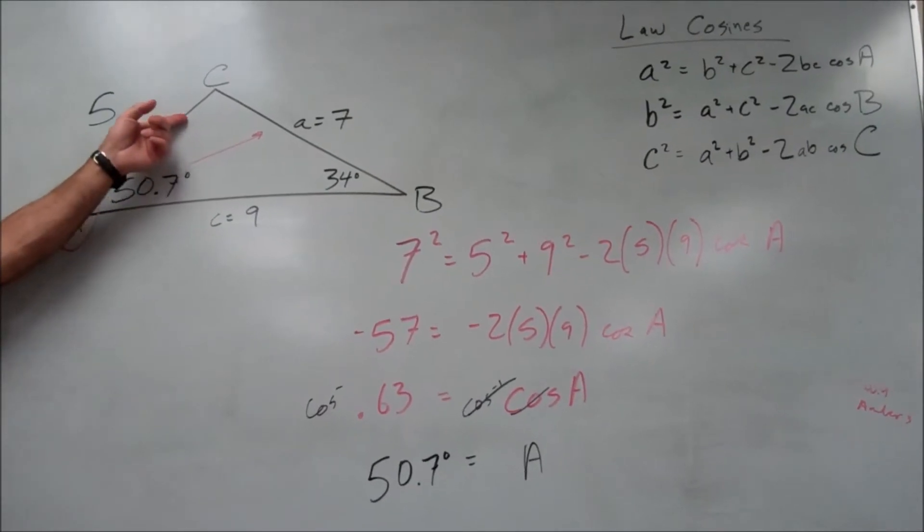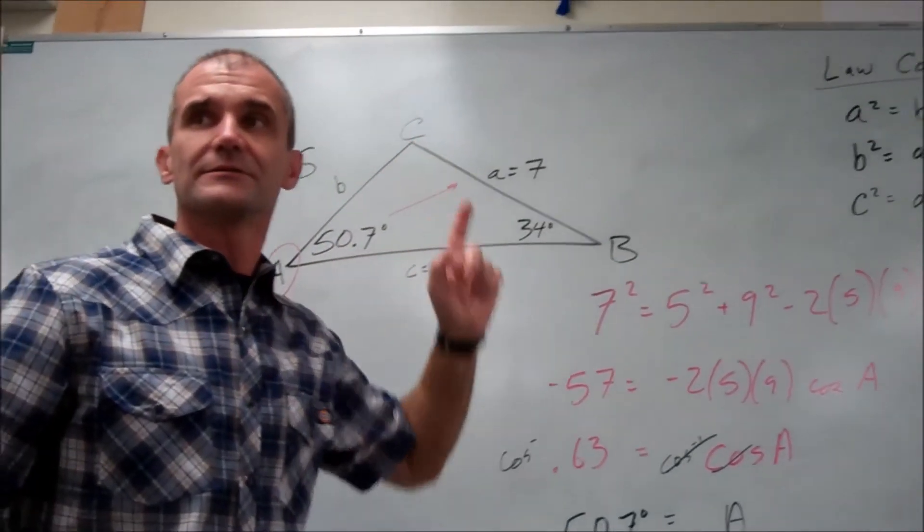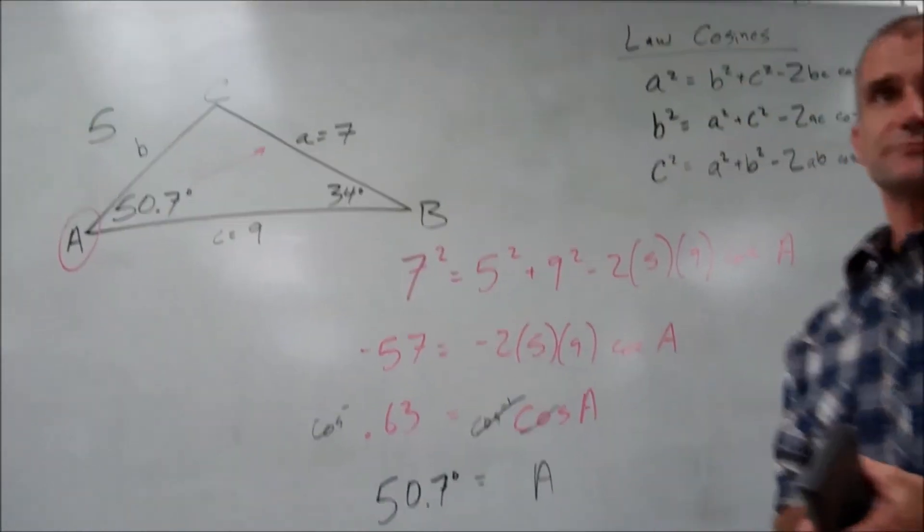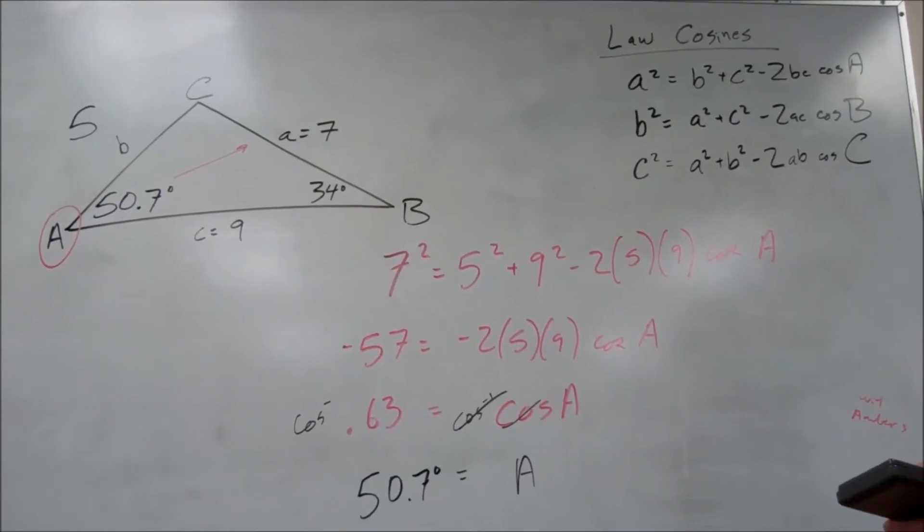And then the third angle, how am I going to figure out the third angle? Adam, how do I figure out the third angle? Well, you just add them together. You add those two together, then subtract that from 180.